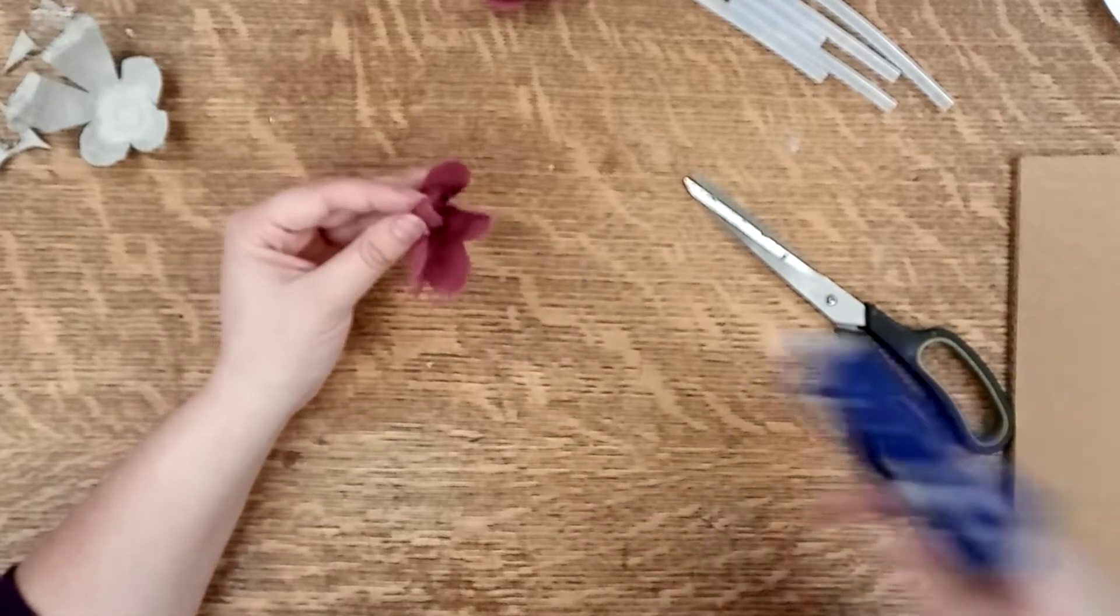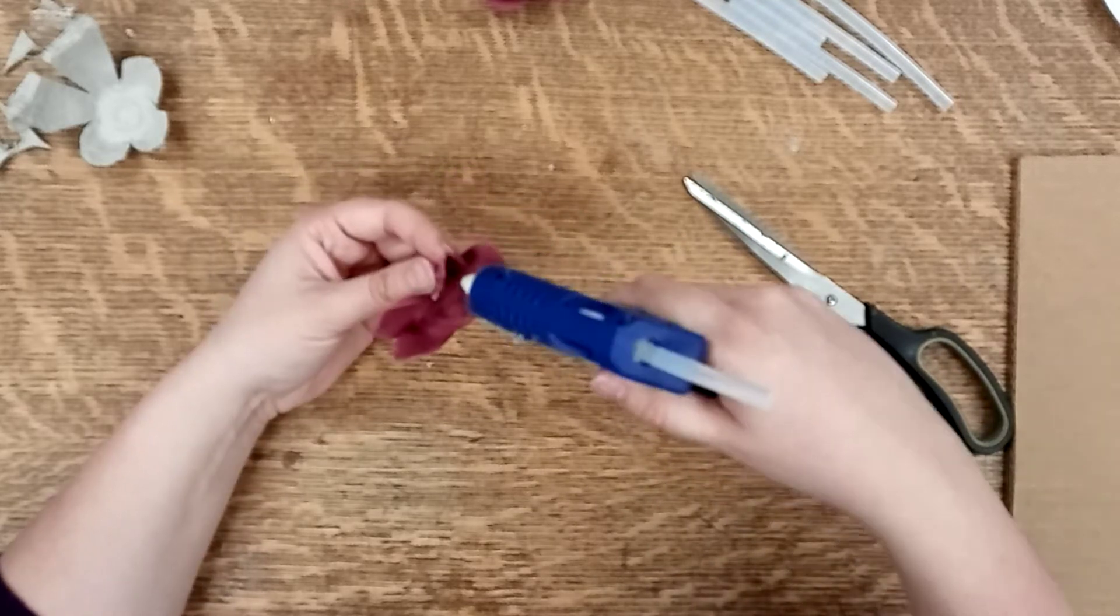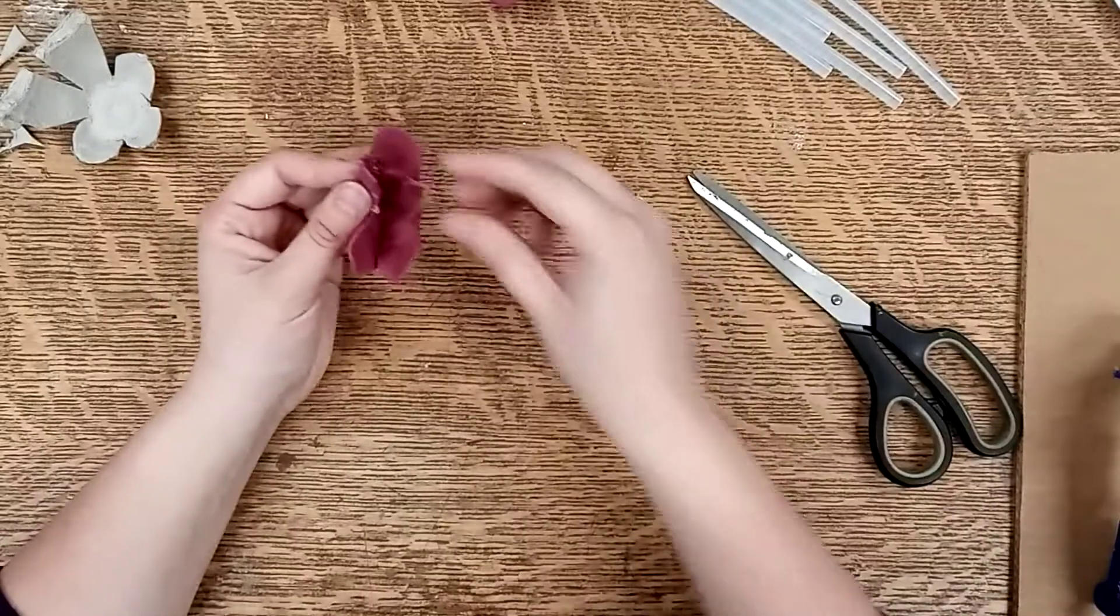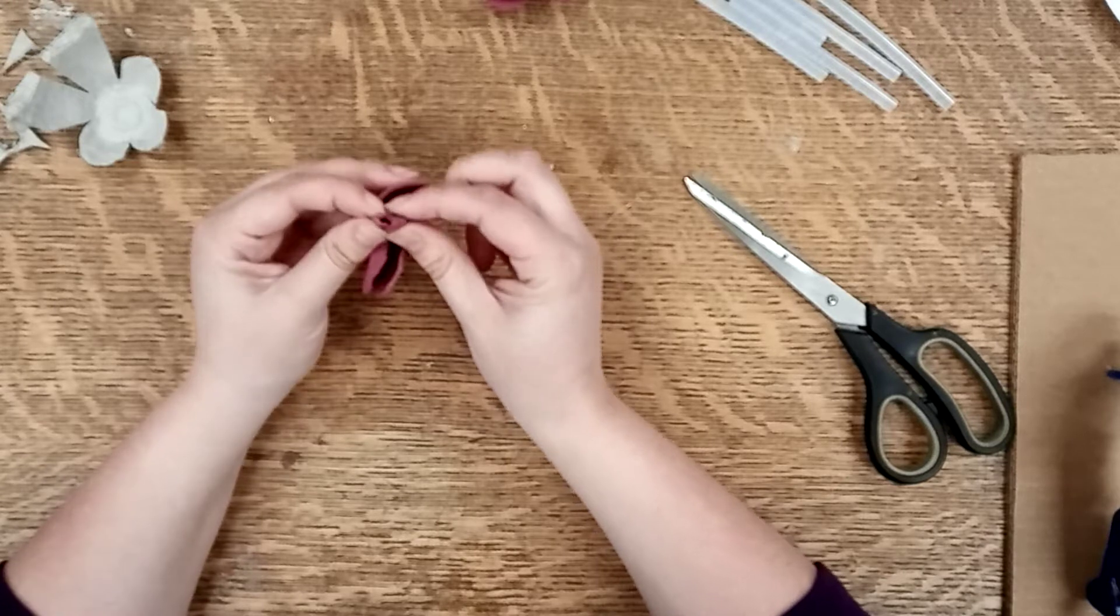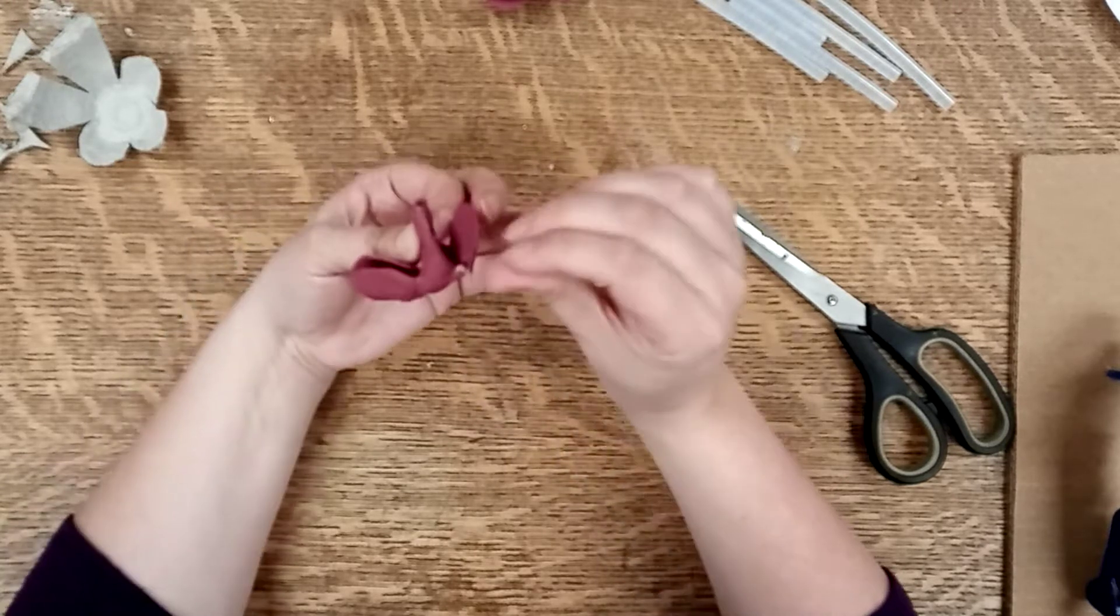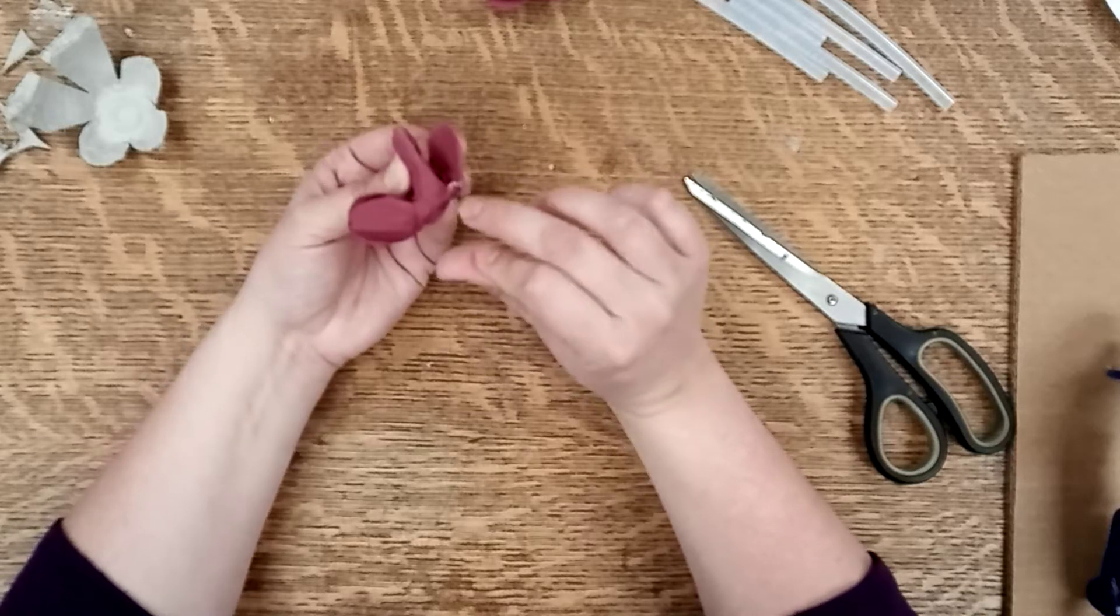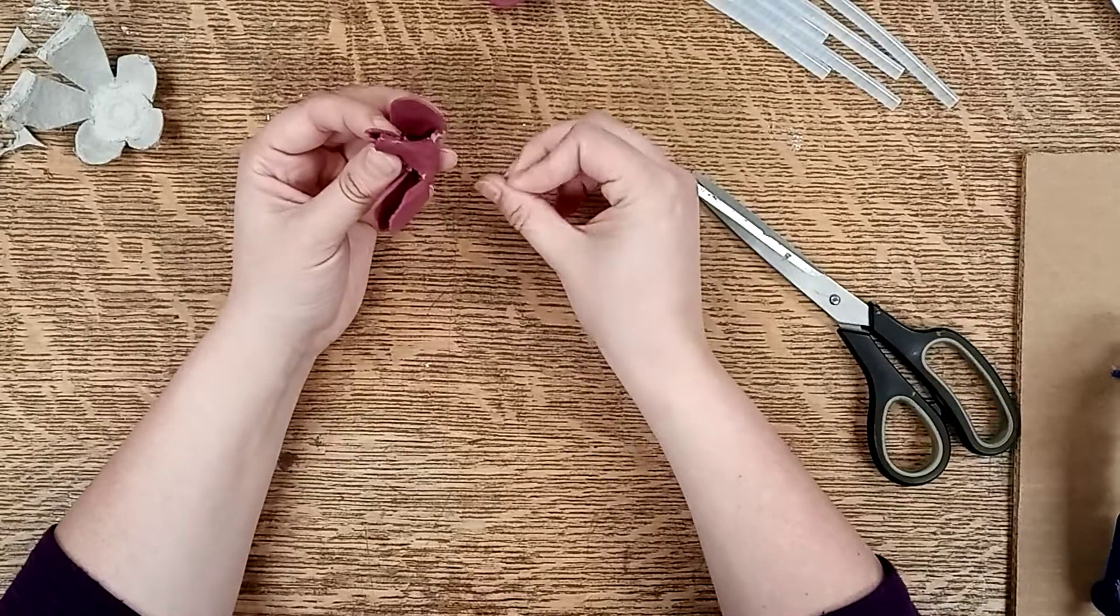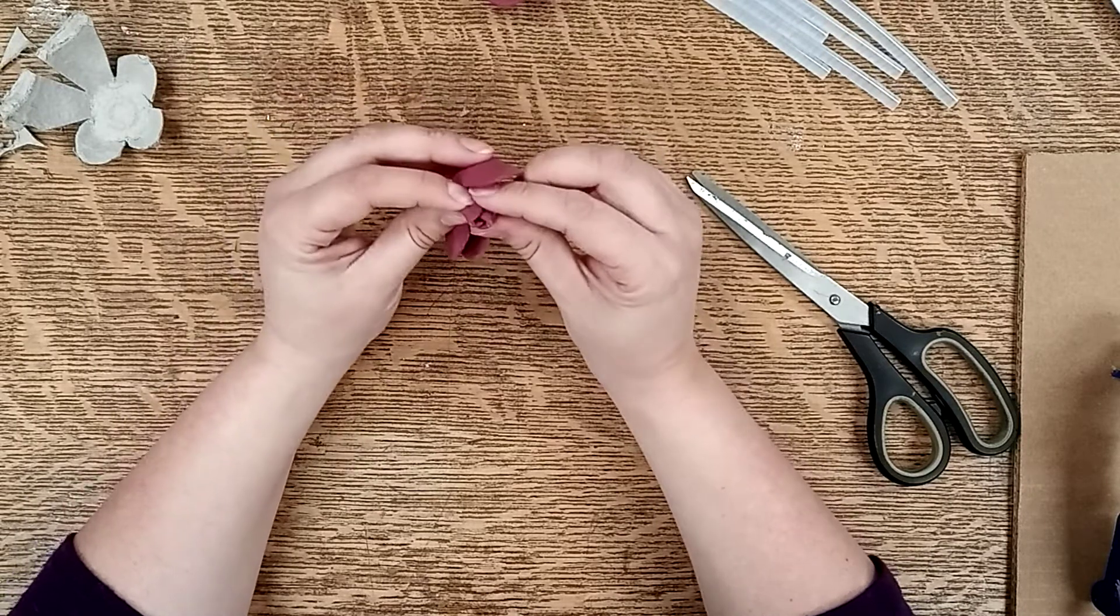And then you want to take your hot glue gun, put a bit of glue on the outside here and the inside here and then stick them together. And you can see that the paint is cracking and showing the gray underneath. That's okay. When you're all done your rose you can go back with your paint and cover that up.